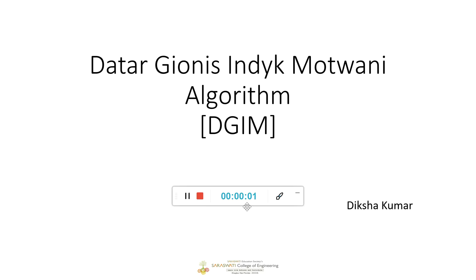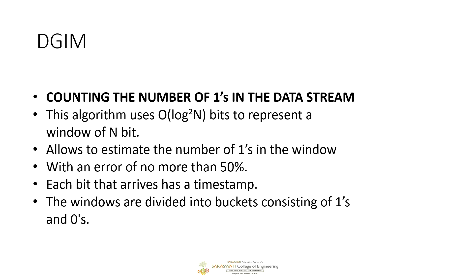Today we will see the DGIM algorithm, which stands for Datar-Gionis-Indyk-Motwani algorithm. DGIM algorithm is used for counting the number of ones in a given data stream. The algorithm uses O(log base 2 of n) bits to represent a window of n bits. DGIM algorithm is used to estimate the number of ones in a long data stream with an estimate error of 50% — it will not give an error more than 50%.